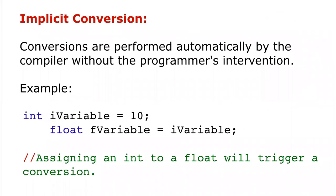In implicit casting, it is a type of casting which is automatically performed by the compiler without programmer's intervention. For example, we can see the below code. We have a variable of type integer and we want to convert it into a floating point number, so we will directly assign it with a floating point number. The compiler will do the casting itself.